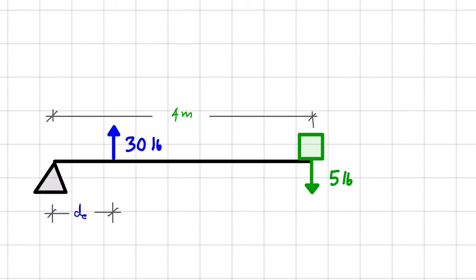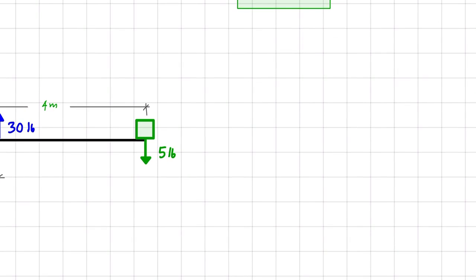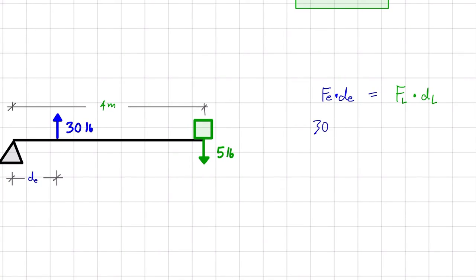And we're trying to lift it up. And we're applying 30 pounds. And we want to know at what distance do we apply that 30 pounds to hold up this five pound load at 4 meters. So let's write this formula again. Fe times De is equal to FL times DL. And the values we know. We have 30 pounds multiplied by De is equal to 5 pounds times 4 meters.